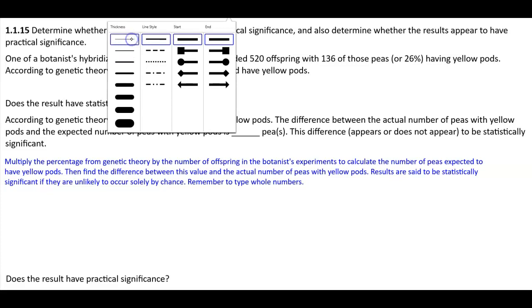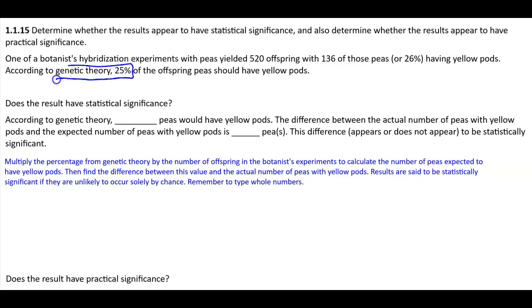we have, according to the genetic theory, 25%. So what we want to do is find 25% of the 520 offspring. Let me go ahead and rewrite that. So again, that's 520. Now remember, we can rewrite 25% either as a fraction or as a decimal. As a decimal, it's 0.25. We also know that the word 'of' means multiplication, of 520.